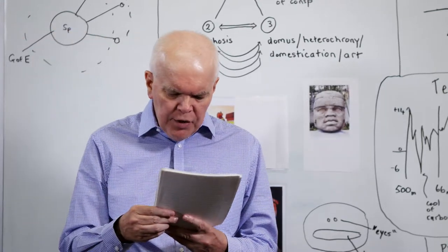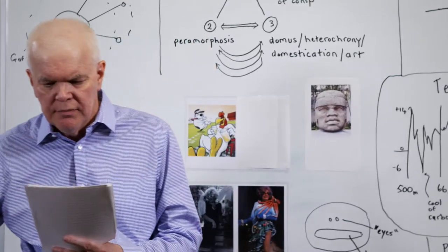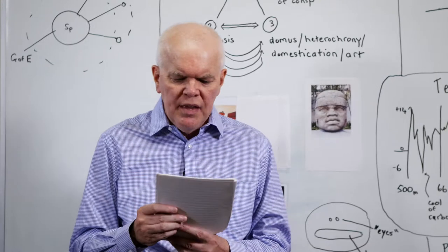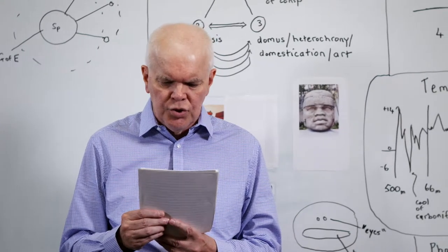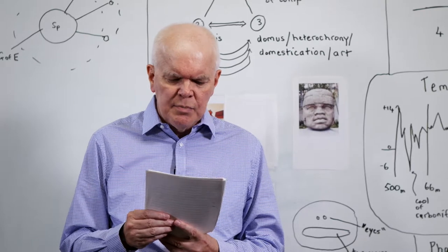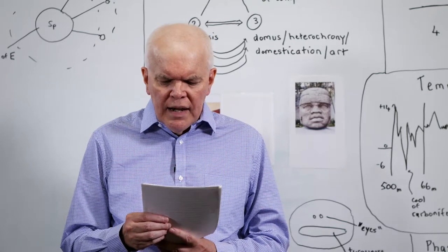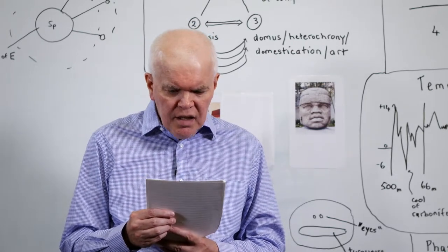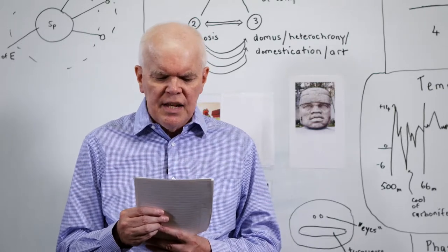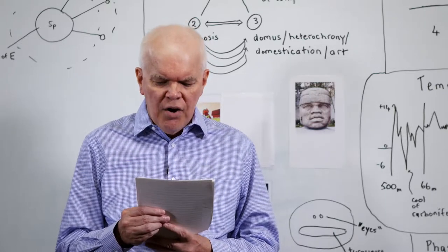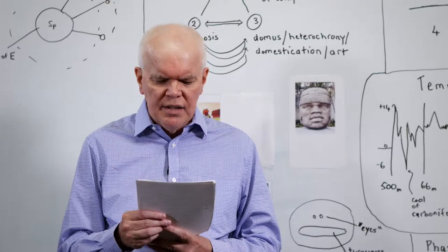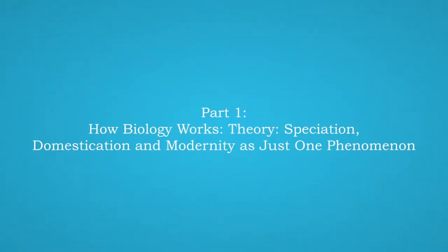Our task today will be to give a brief outline of how we think biology actually works. Our particular focus will be why there is a tendency towards gigantism in evolution, and why the species of planet Earth seem to be so devoted to advertising. We are lining up these two topics side by side because it is our view that the advertising art display strategies are a continuation of gigantism by other means. Part one, how biology works, theory, speciation, domestication, and modernity as just one phenomenon.